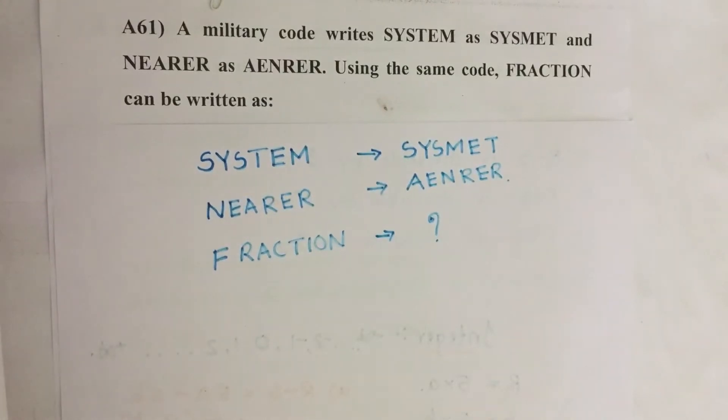Hello everyone, here I am going to solve 2016 CSAT question number 61 from question paper series A. A military code writes SYSTEM as SYSMET and NEARER as AENRER. Using the same code, FRACTION can be written as.